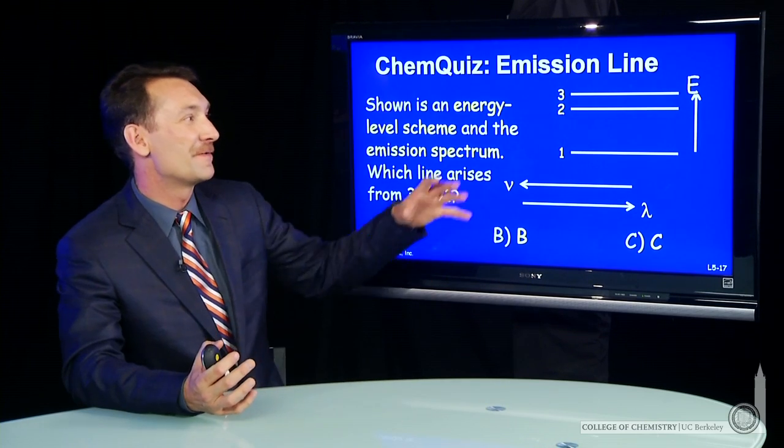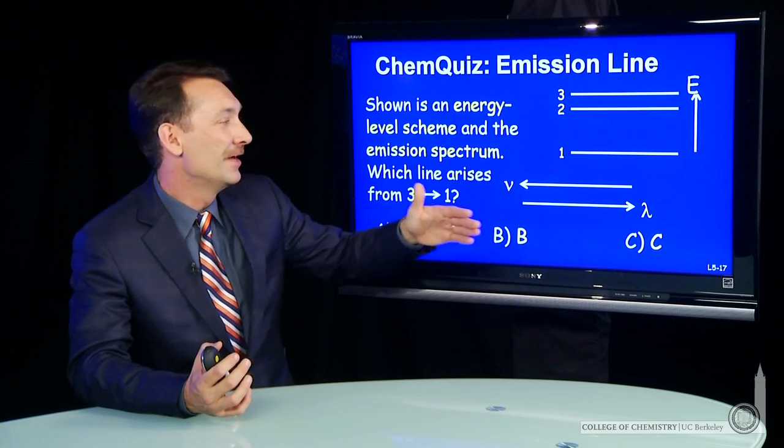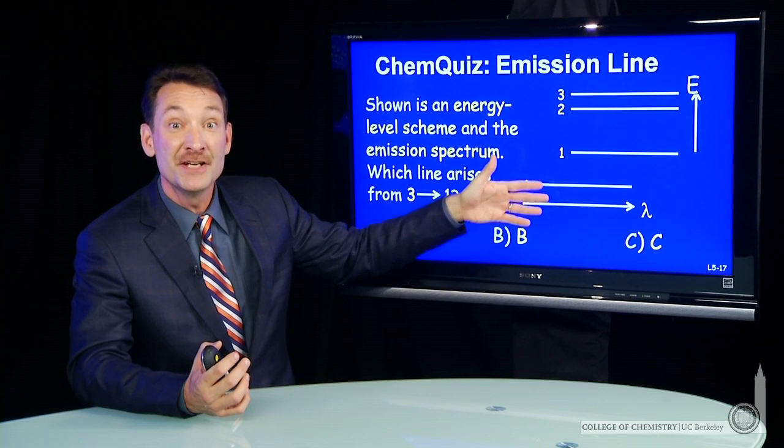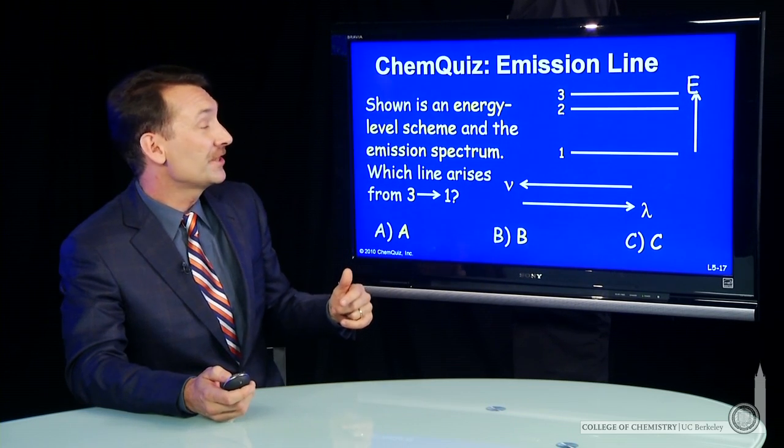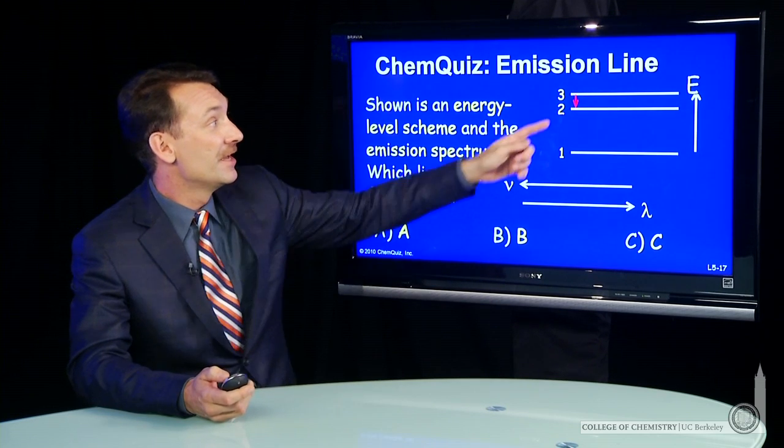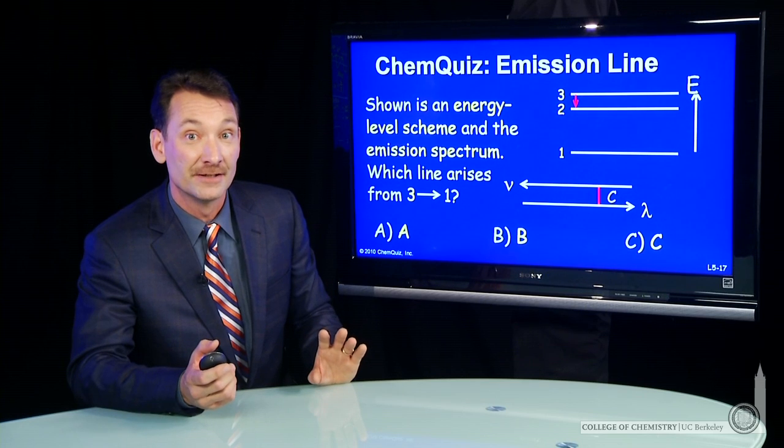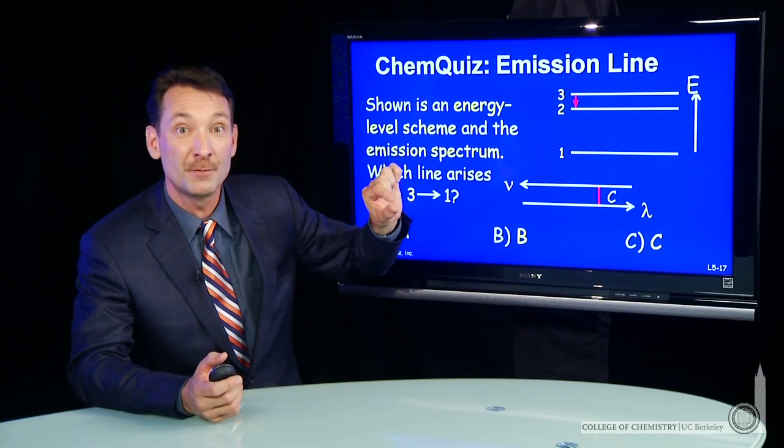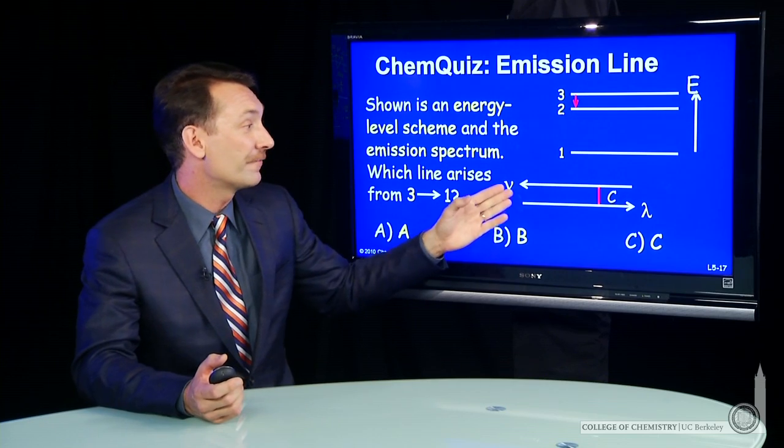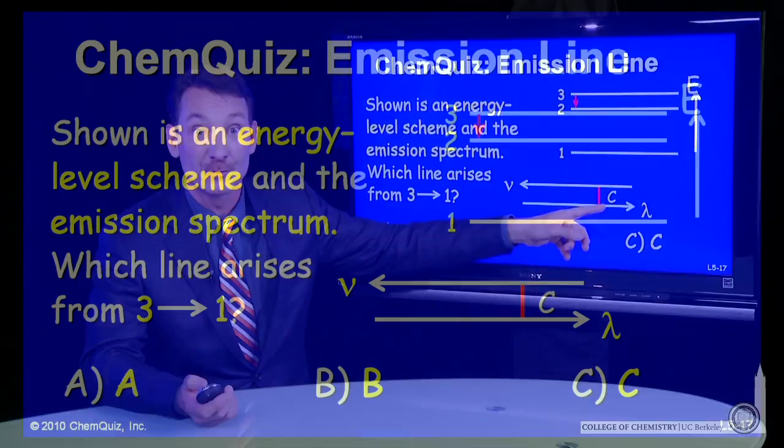We're trying to get from the energy level spacings in some matter to the actual emission spectrum that we'd observe. If you look at the possible energy transitions, a transition between level three and two is possible. That would be the lowest energy of the possible, the smallest spacing here, so that's the smallest energy. On a frequency plot, it would be the lowest frequency or highest wavelength.